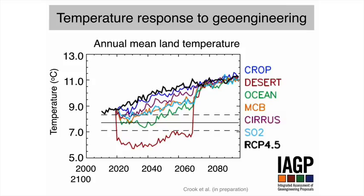We see all of our geoengineering methods cool the climate. Some of them, like changing the reflectivity of crops, have a very small impact because you can only increase the reflectivity to a certain extent and there's a limited surface area to geoengineer. Others, like changing the reflectivity of desert regions, can have a very dramatic impact on land surface temperatures. That impact is largely due to it being quite a large forcing or change to the climate system, but also very concentrated over land, hence the large impact on annual mean land temperature.